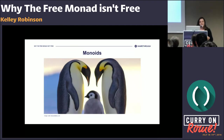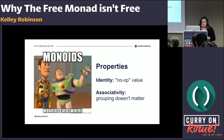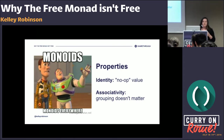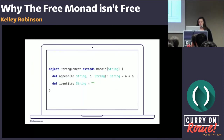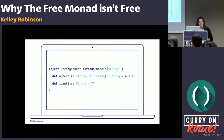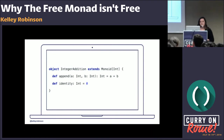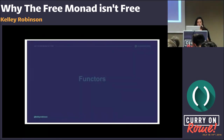Two of one type coming together to produce another instance of the type — that is a monoid. There are some properties it follows: identity is a no-op when used with the append method, and then there's associativity — the grouping, as you can think of it with parentheses, doesn't matter. Monoids are everywhere. String concatenation is a great example: the append method takes two strings and returns another string, and the identity value is the empty string. Integer addition is another great example — the identity value is zero.